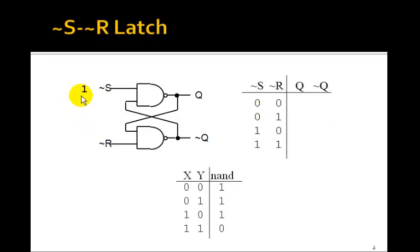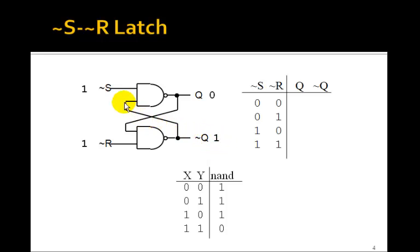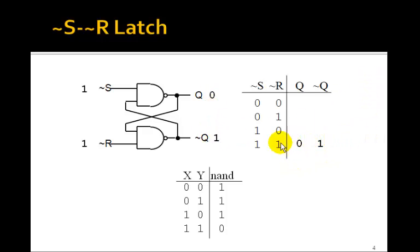Let's suppose that this input is 1 and this input is 1, and let's assume that the output of this one is 0 and see what we get. We've got a 0 and a 1 coming in here, so this output must be 1. And this will have a 1 and 1, which means this output is 0. So this is a stable state. With two inputs 1,1, we get 0 and 1 for the output.